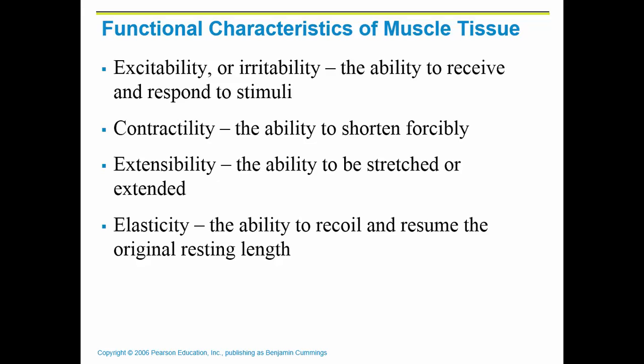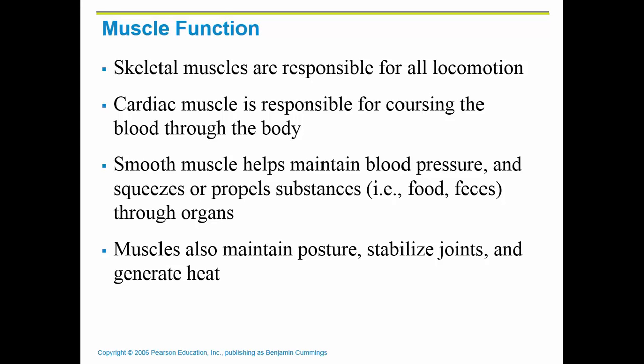General characteristics of muscle tissue include excitability or irritability — the ability to receive a stimulus and respond to it. Muscle can also contract, which is the ability to shorten its sarcomeres, and it has extensibility, meaning it can be stretched or extended. Elasticity is the ability to recoil. Muscle functions include making things move: cardiac muscle pushes blood, smooth muscle maintains blood pressure and propels substances, and muscles also maintain posture, stabilize joints, and generate heat.